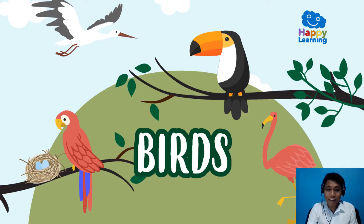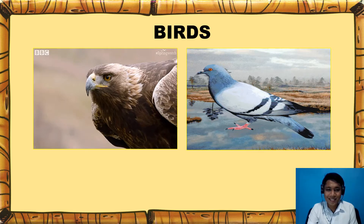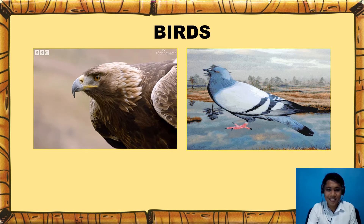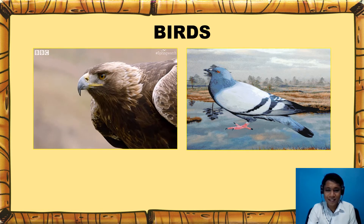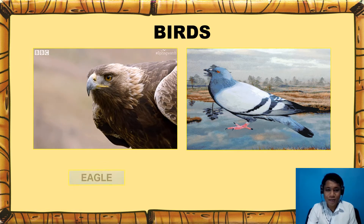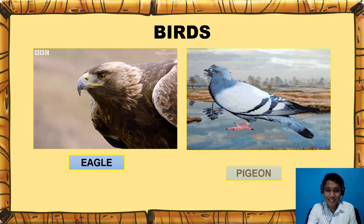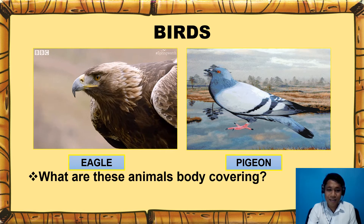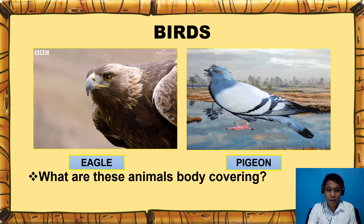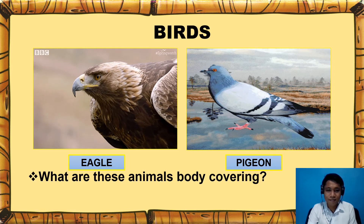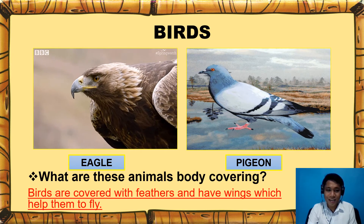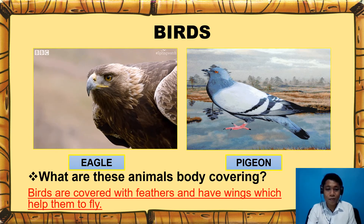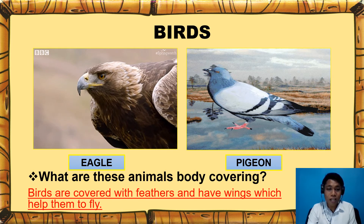Next, we have birds. What are these animals? We have an eagle and a pigeon. Now, based on the picture, what are these animals' body covering? Birds are covered with feathers and have wings which help them to fly.